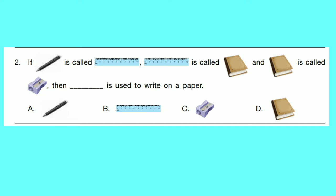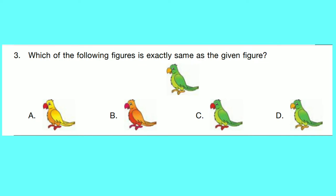Question number 2: If a pen is called scale, scale is called book, book is called pencil cutter, then dash is used to write on a paper. Clearly, we use a pen to write on a paper. But here, a pen is called a scale. So, correct option is B: Scale.